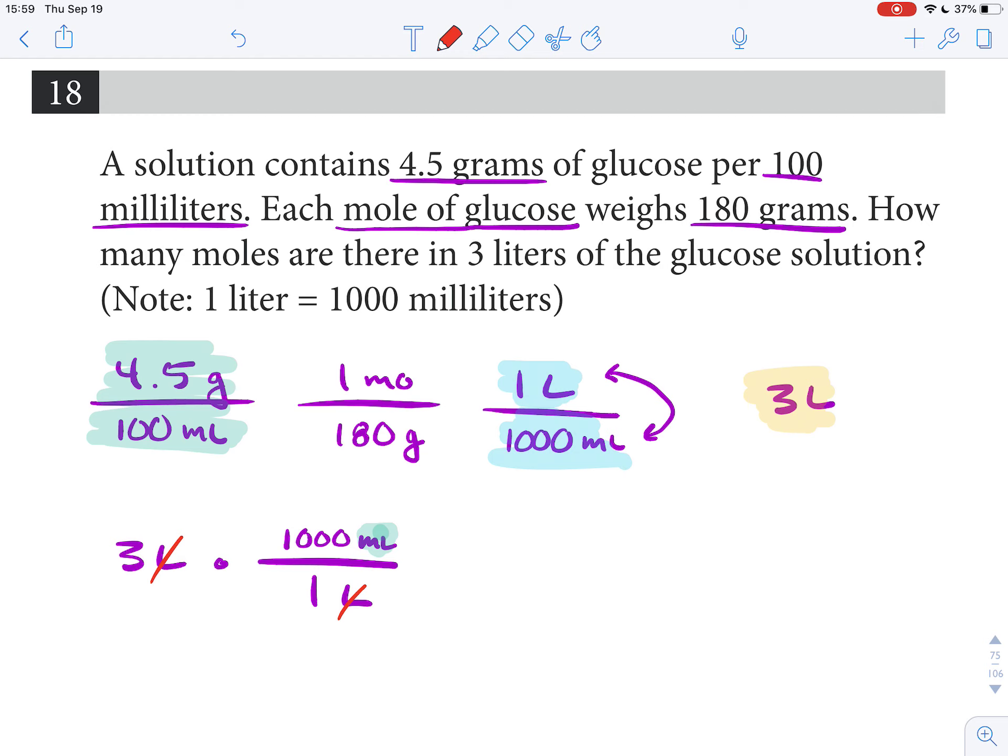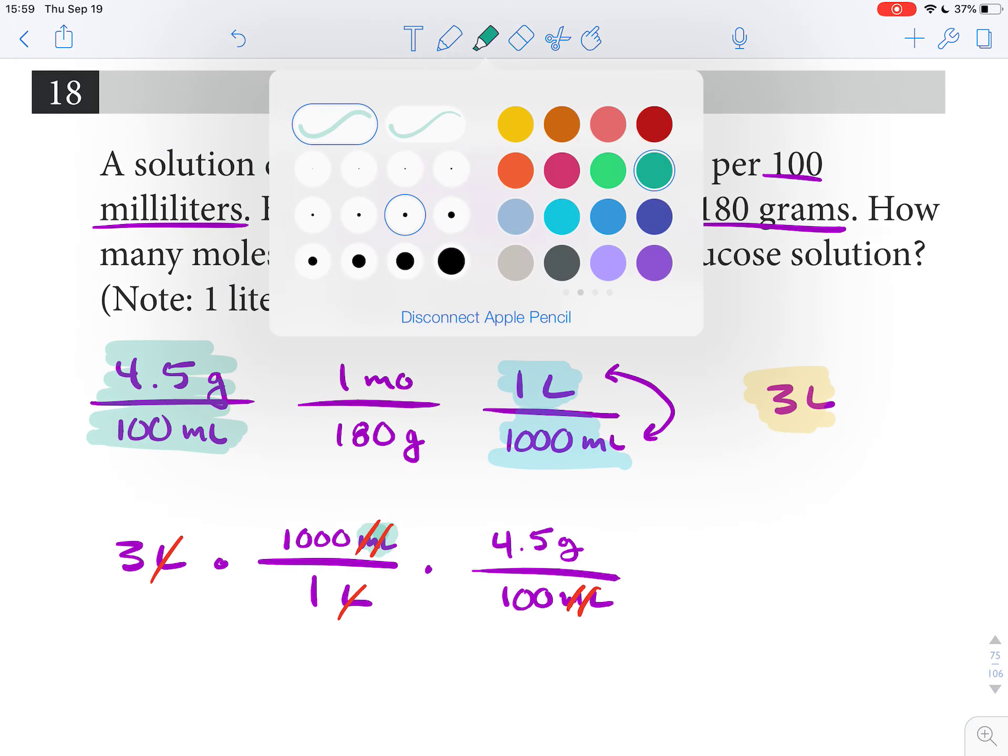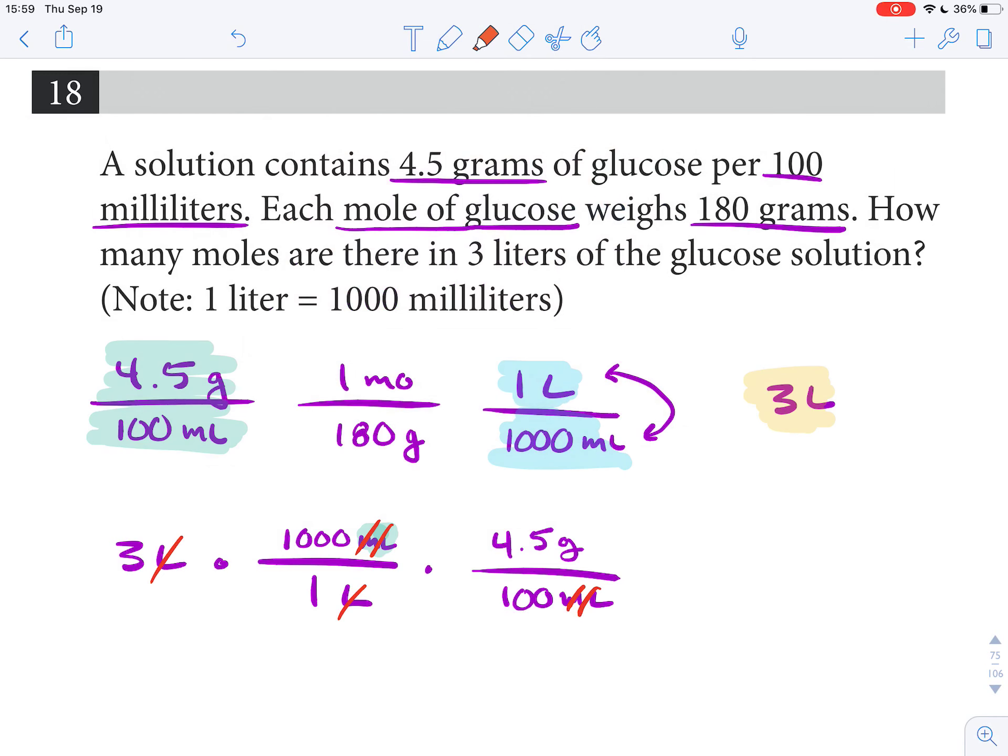So we will write that as 4.5 grams is equal to 100 milliliters. What we're seeing here is that milliliters gets cancelled out with milliliters. Last but not least, our unit of measure is grams, so we're going to be looking for a conversion factor with grams.